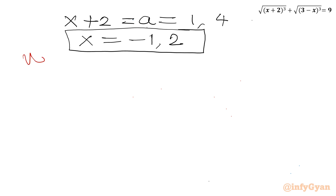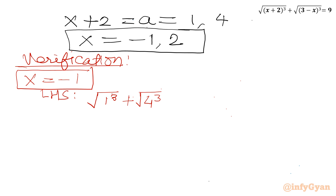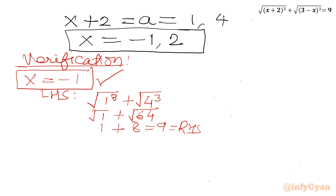Now let's verify both solutions. For x = −1, the LHS is: √((−1+2)³) + √((3−(−1))³) = √(1³) + √(4³) = √1 + √64 = 1 + 8 = 9 = RHS. So x = −1 is verified.